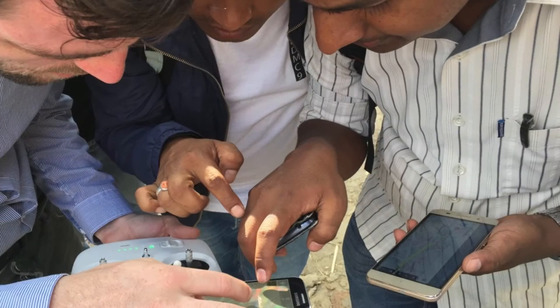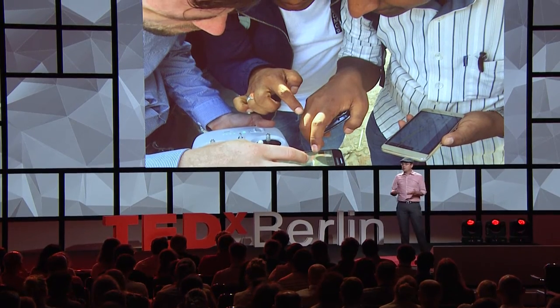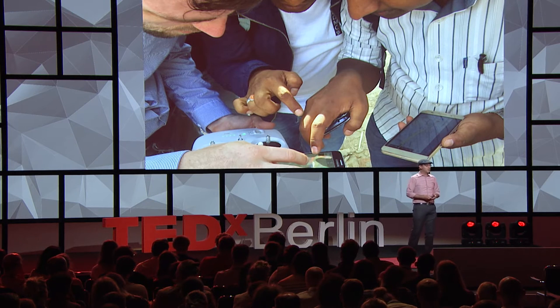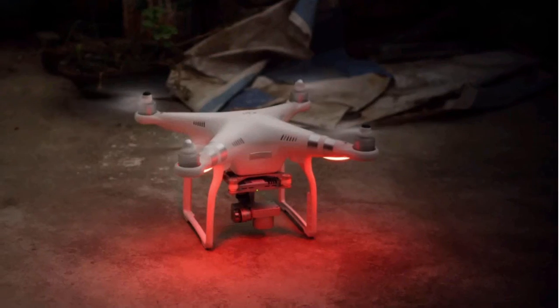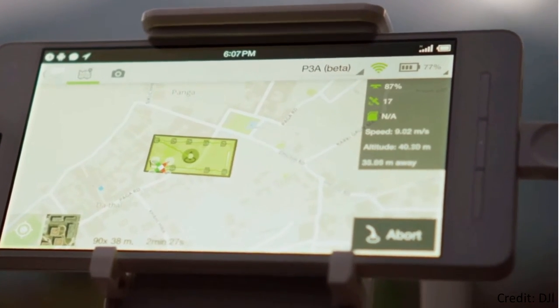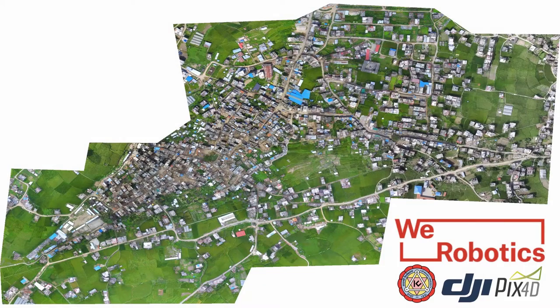We didn't fly these robots manually — that would defeat the purpose. We programmed all 10 of our robots with smartphones. It's actually quite simple. You draw a green triangle over the area you want to survey and press go. The robot takes off automatically, snaps pictures, and lands. Once it lands, you take the data, download it on your laptop, and stitch all the pictures together to create a very high resolution map of the disaster damage around Kathmandu.